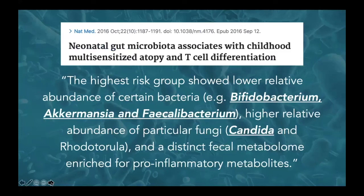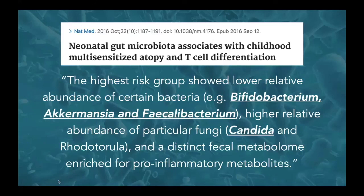A study titled 'Neonatal Gut Microbiota Associates with Childhood Multi-Sensitized Atopy and T-Cell Differentiation' found that the highest-risk group showed lower relative abundance of Bifidobacterium, Akkermansia, and Faecalibacterium, and higher relative abundance of fungi such as Candida. There are many examples in animal models and a growing number in humans, especially in infants and young children, showing that imbalance in the normal microbiome can really influence the development of food sensitivities.